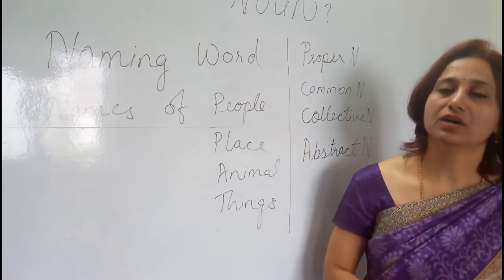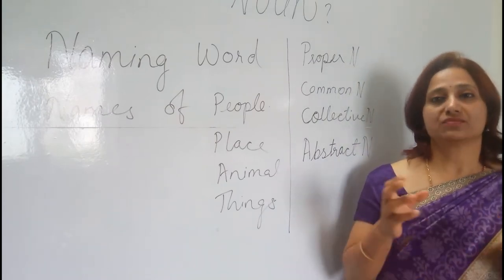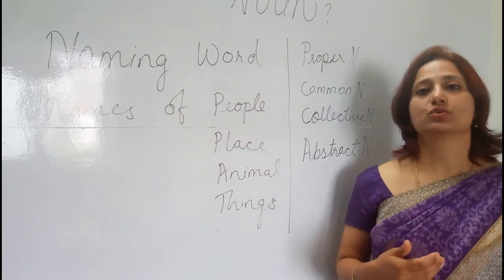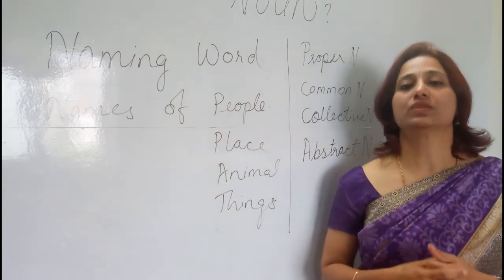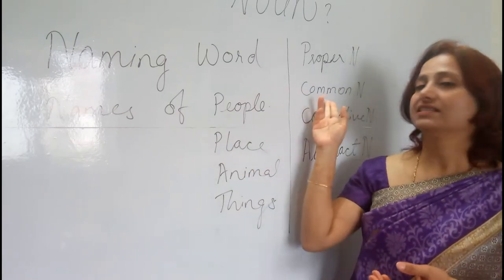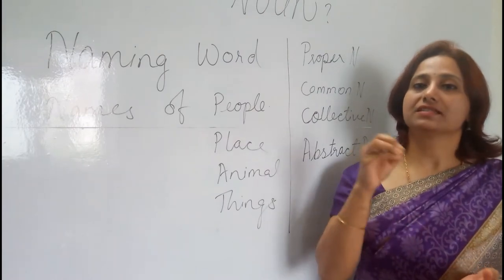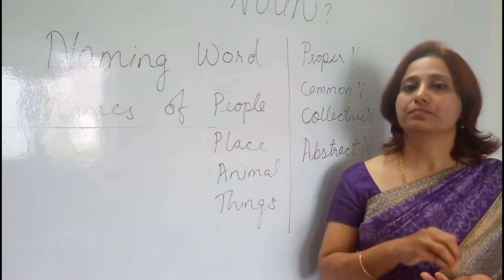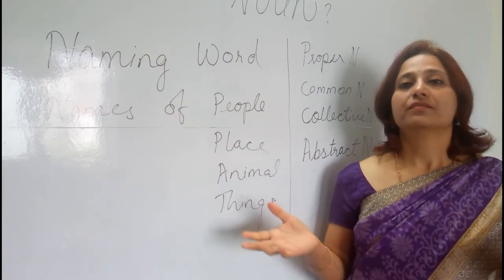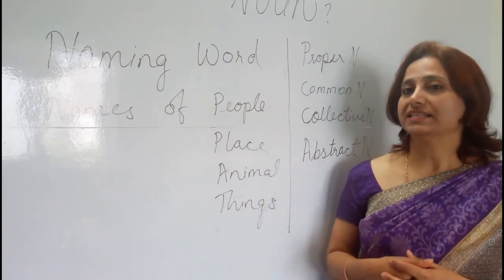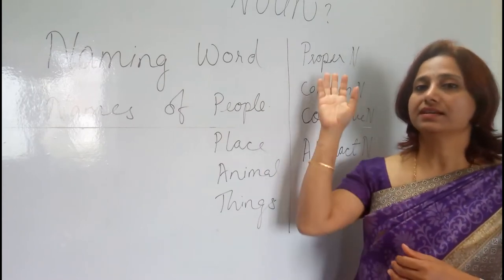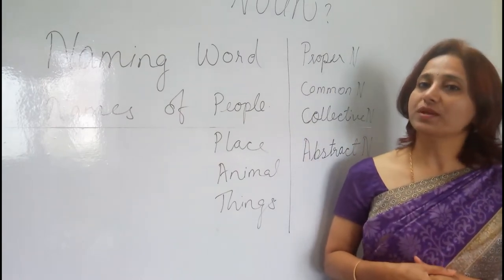People names can be proper nouns or common nouns. A proper noun is specific — for example, I am Lata, she is Sunita, he is Suraj. 'Friends' is a common noun. Proper nouns are specific to a person, place, animal, or thing, while common nouns are general. For example, names of people are proper nouns, while designations of people are common nouns.